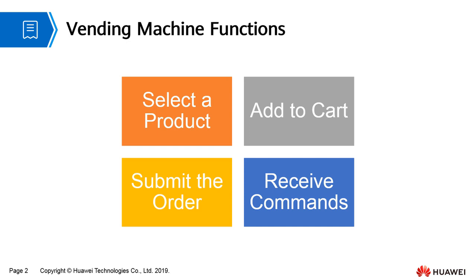You can press F1 on the development board to select a product and press F2 to add the product to the cart. When F1 is under Submit, press F2 again to submit the order. The developer board can also receive commands and change the product sequence based on the big data analysis result.